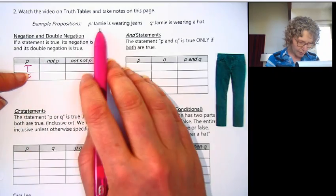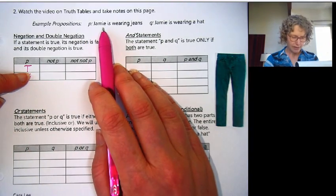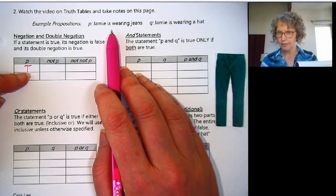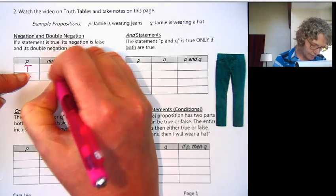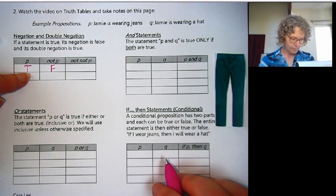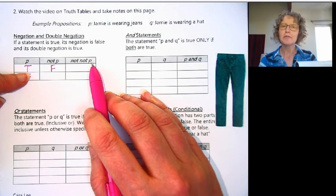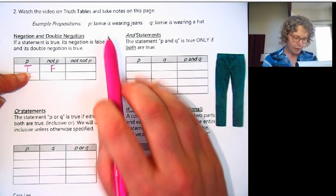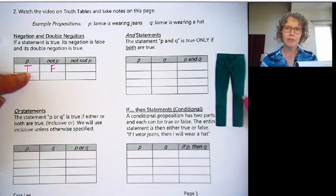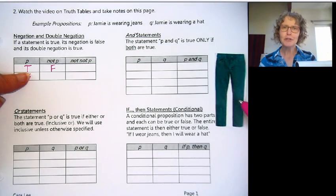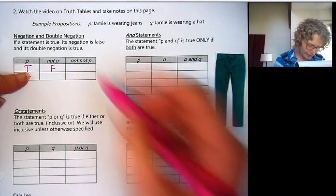If Jamie's wearing jeans, if that's true, then not P would be the statement Jamie is not wearing jeans. Well we know Jamie's wearing jeans, so that would be false. And not not P is the double negative or double negation. So that would be Jamie is not not wearing jeans. If Jamie is wearing jeans, if that's true, then Jamie is not not wearing jeans—that is also true.